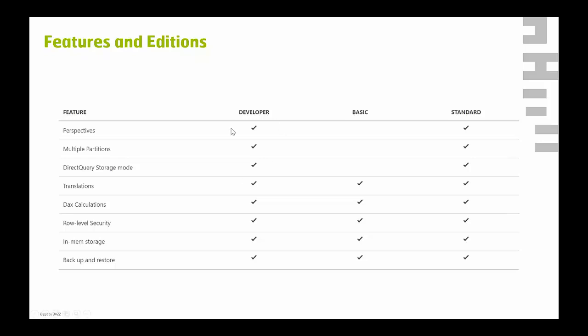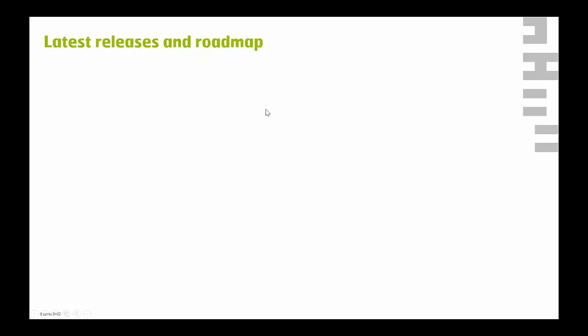The Developer edition has full functionality but is limited in model size, lacks high availability or support guarantees, and runs on shared capacity. Basic and Standard editions run on dedicated capacity. The latest released feature on the current roadmap is governance features for cache refresh settings, which allows you to override certain settings elaborated from front-end tools like Power BI or Tableau that enforce a cache refresh with direct query — which leads to a lot of traffic on the engine and worse query performance.